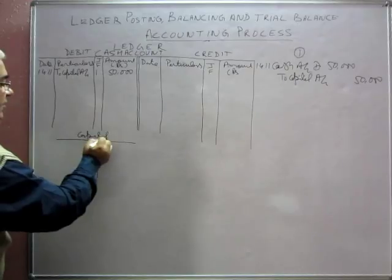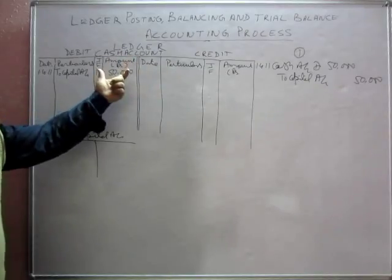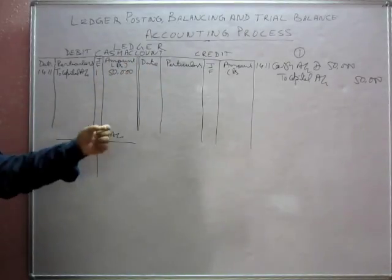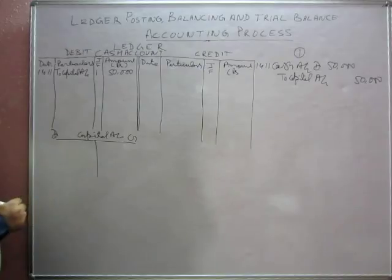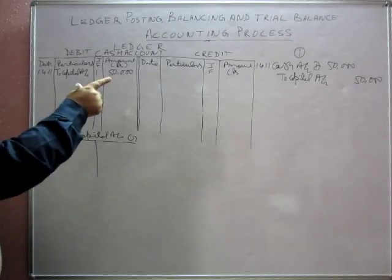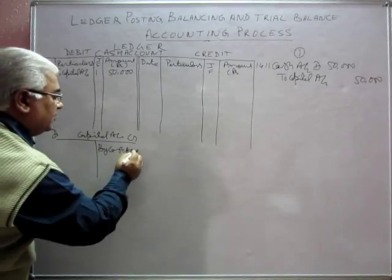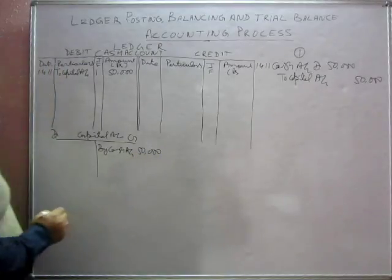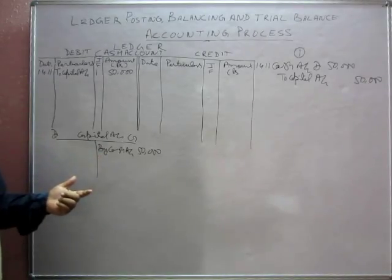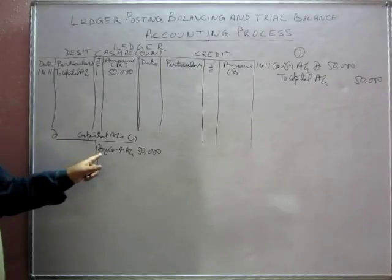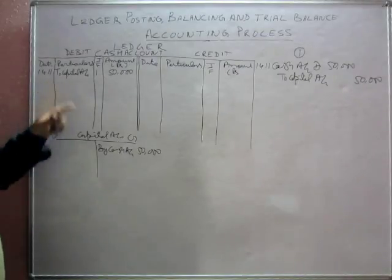Similarly, for the capital account, we post the journal entry. Capital account is being credited by 50,000 and the corresponding account is cash, so we write 'By Cash Account, 50,000'. Note that 'to' and 'by' don't have any particular significance — nowadays people often don't write them either, and if you don't write 'by' and 'to', it won't affect you. You can keep it or leave it.